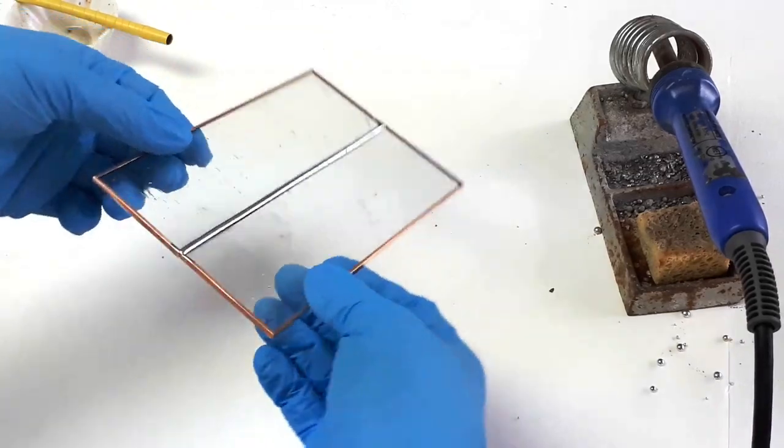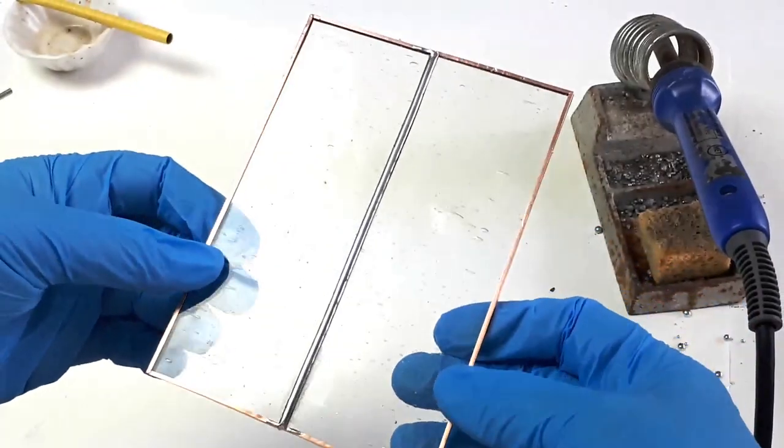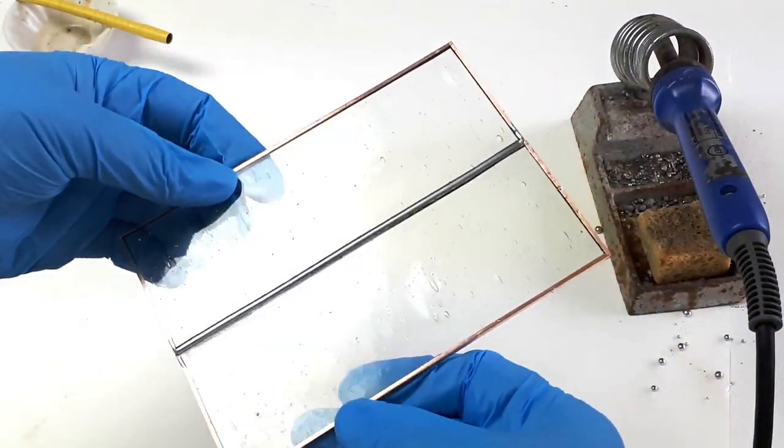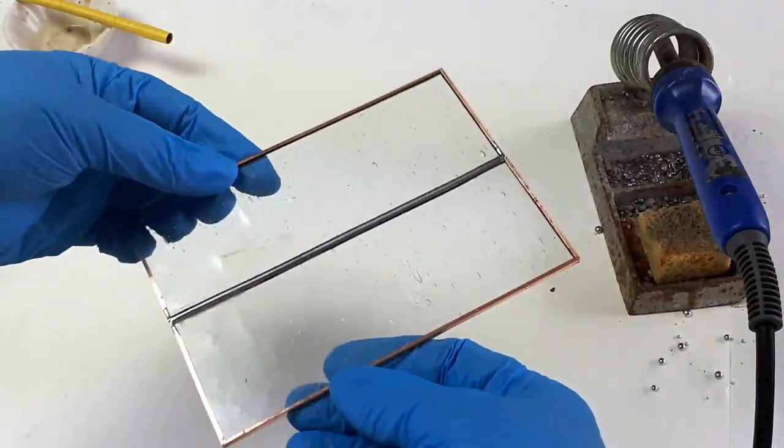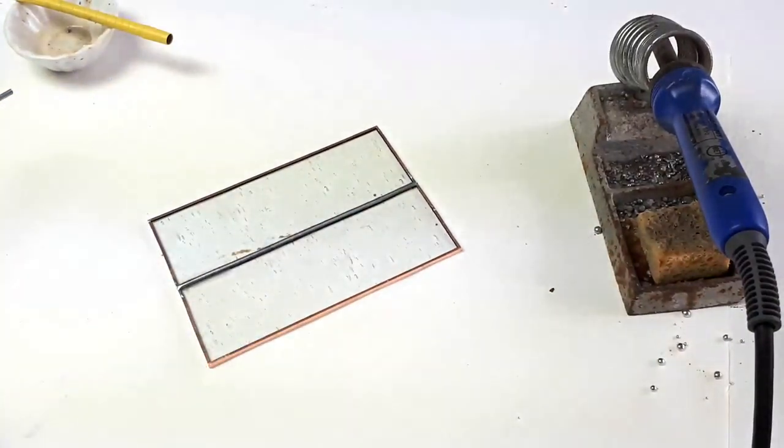For this demonstration I'm just using two scrap pieces of glass that I've put foil around the edges of, and I've already soldered them together. So if you have some scraps that you can use at home, this is a great way to practice soldering.